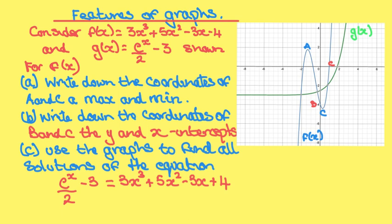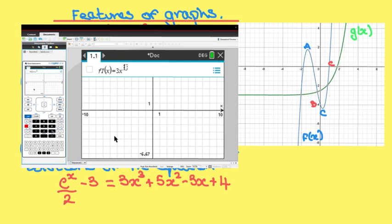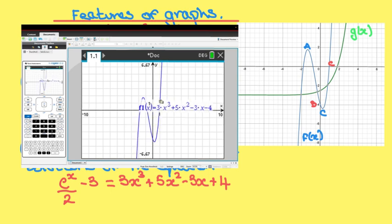Using our GDC, if we open our GDC at a graphs page and type in the first equation f(x), which is 3x³ + 5x² - 3x - 4, press enter and there is our graph.